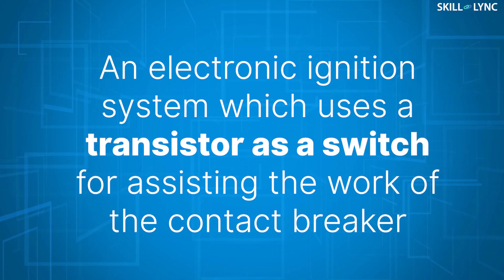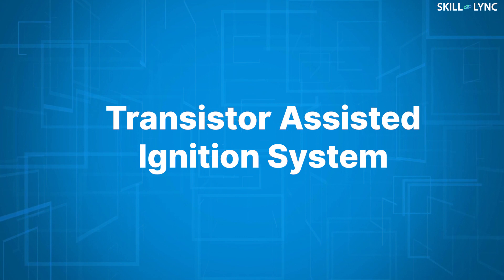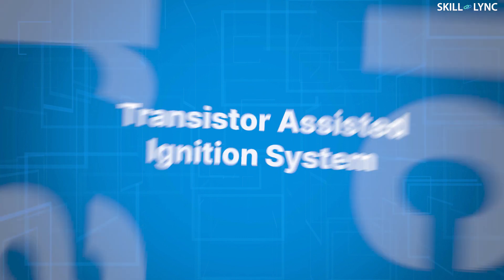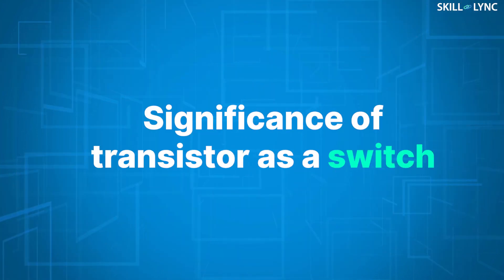It's an electronic ignition system which uses a transistor as a switch for assisting the work of the contact breaker. Hence, it is also known as transistor assisted ignition system. Before moving on to the construction of the transistorized ignition system, let us see the significance of transistor as a switch.